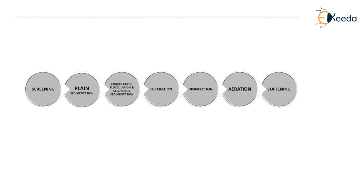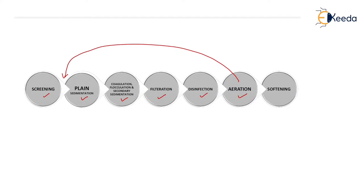The various units in sequence are: screening, then plain sedimentation, then coagulation, flocculation and secondary sedimentation, then filtration, then disinfection, and after disinfection, aeration. If the water is highly polluted, we will do the aeration process as the second process before the plain sedimentation to improve the efficiency of the plain sedimentation tank. After disinfection and aeration, the last process is the softening process which will remove the hardness of the water. We will now see each step and process in detail, starting with the screening process.